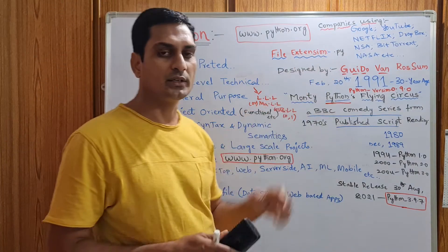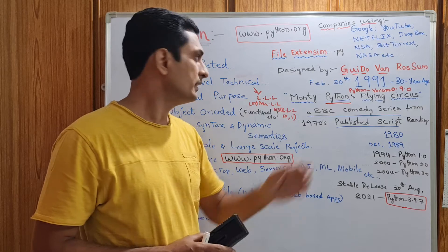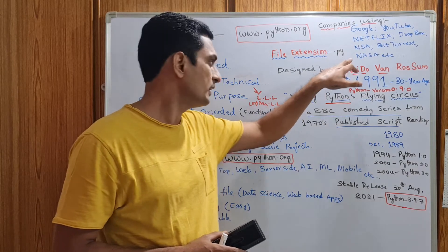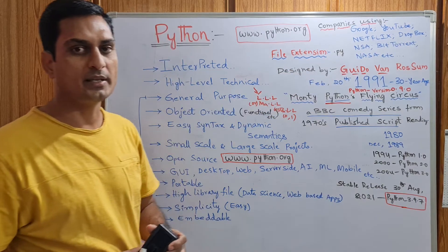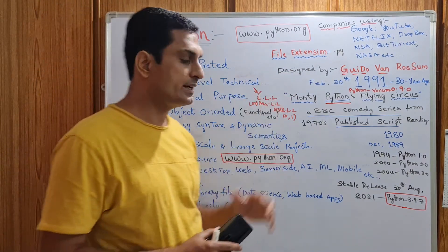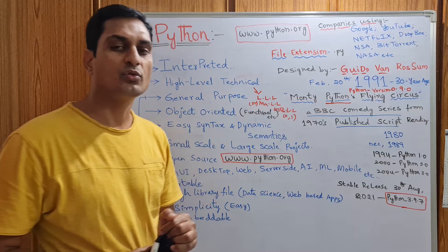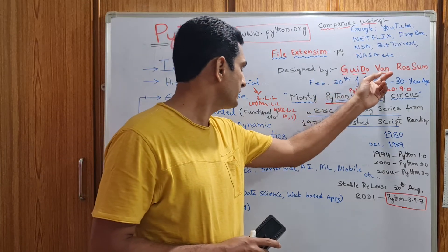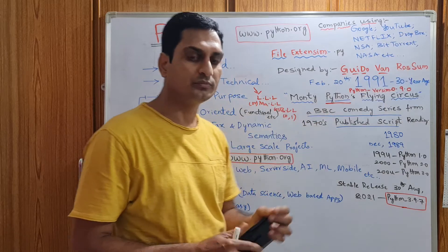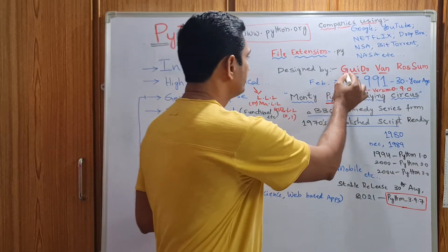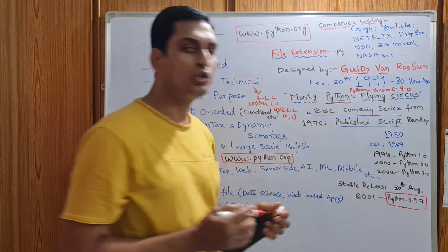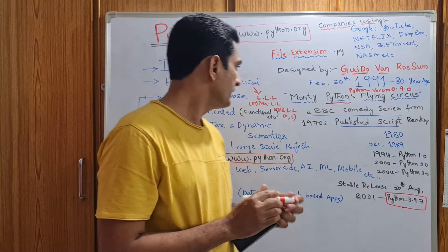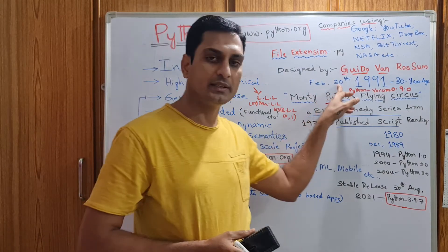The file extension to save a Python file is .py. Regarding who created the language: the designer's name is Guido van Rossum, and Python was first released on February 20th, 1991.